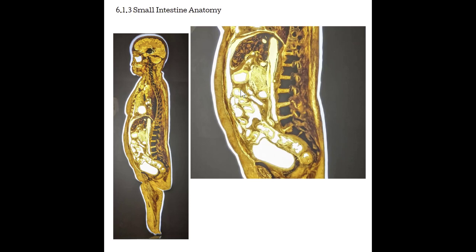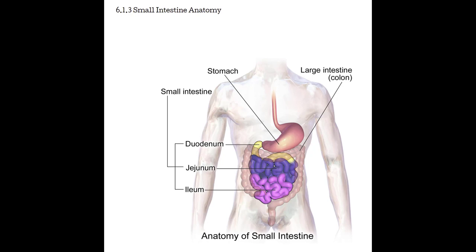There are three segments to the small intestine. The first segment is the duodenum — the area that gets food from the stomach first. After the duodenum, food enters the jejunum, and after the jejunum, it goes into the ileum. The ileum then connects to the cecum, which is the start of the large intestine. Note: the first segment is pronounced both 'duodenum' and 'duodenum' — both are correct.